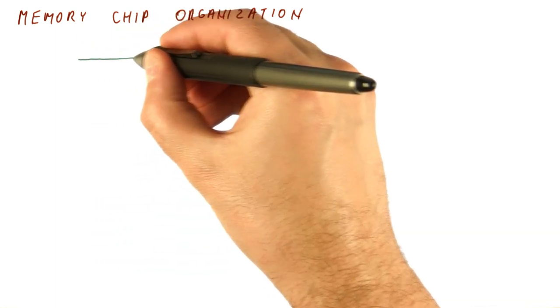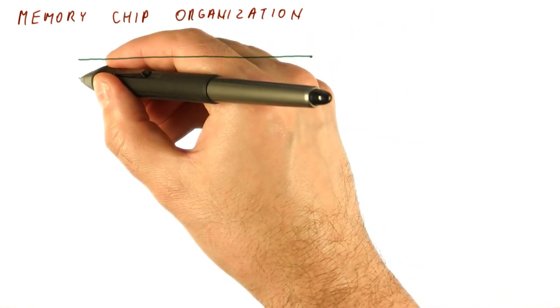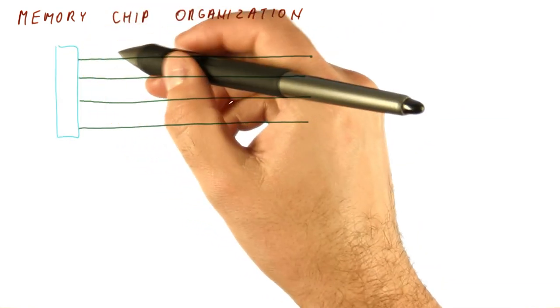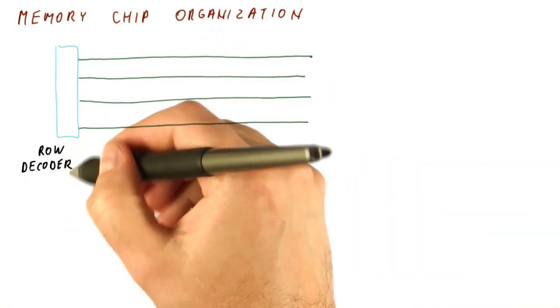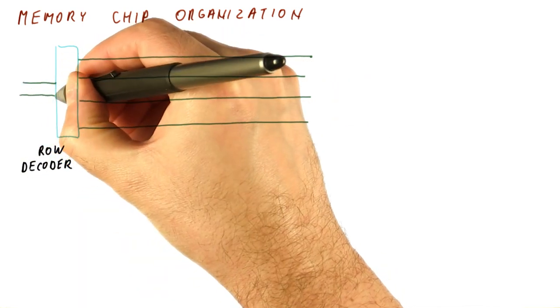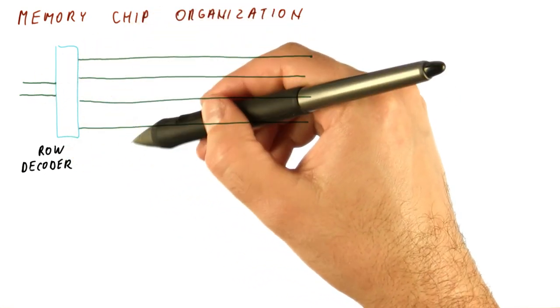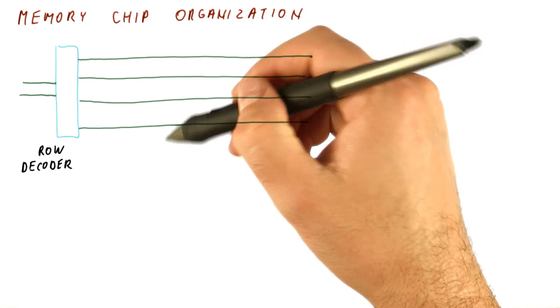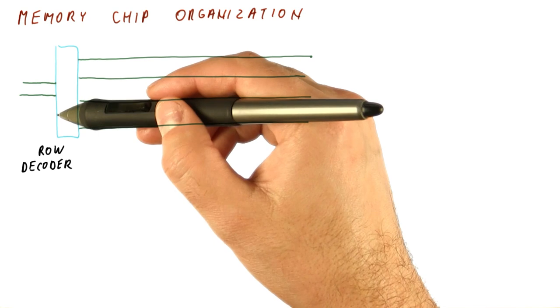We said already that we have these word lines that activate cells. We have a number of word lines. And the thing that decides which word line gets activated is called a row decoder. What we give to the row decoder is some bits of the address that tell it which of the word lines to activate. It can only activate one word line at a time.